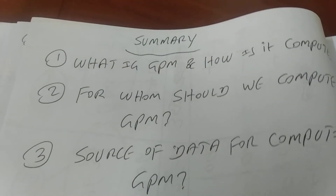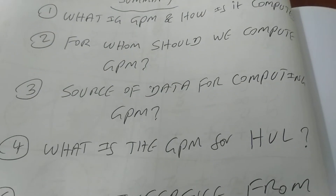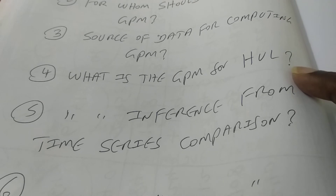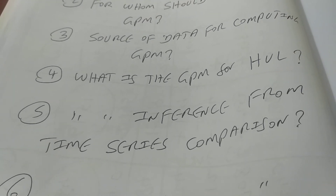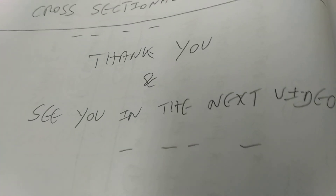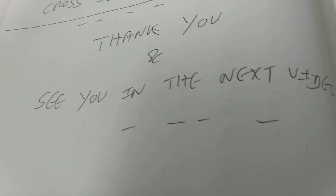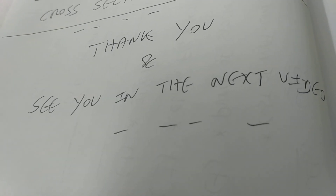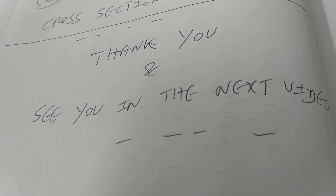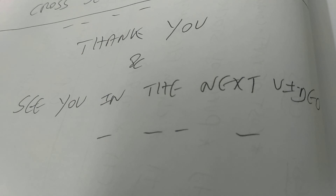We have come to the end of the presentation. In this video we discussed: what is gross profit margin, how is it computed, where is the source of data, for whom to find gross profit margin, how to compute GPM for HUL and what is the number, whether the company is improving compared to the previous year, and whether the company is doing well compared to its competitors. Thank you for watching. See you in the next video.